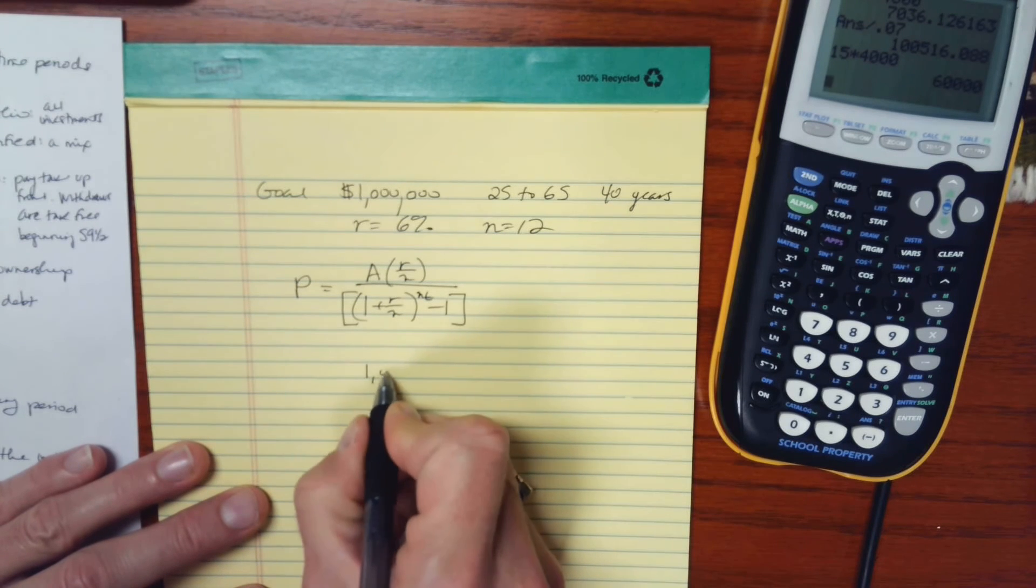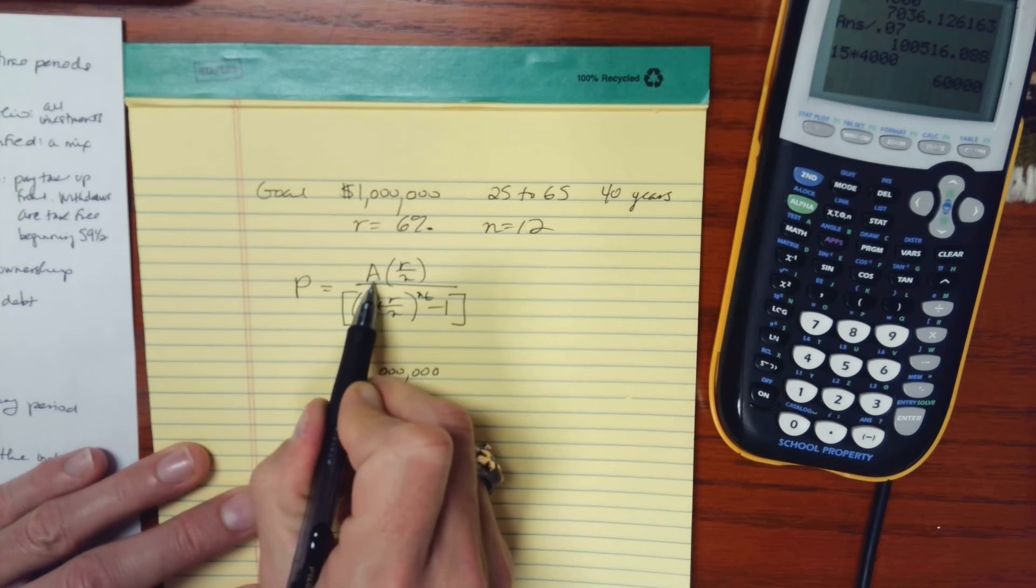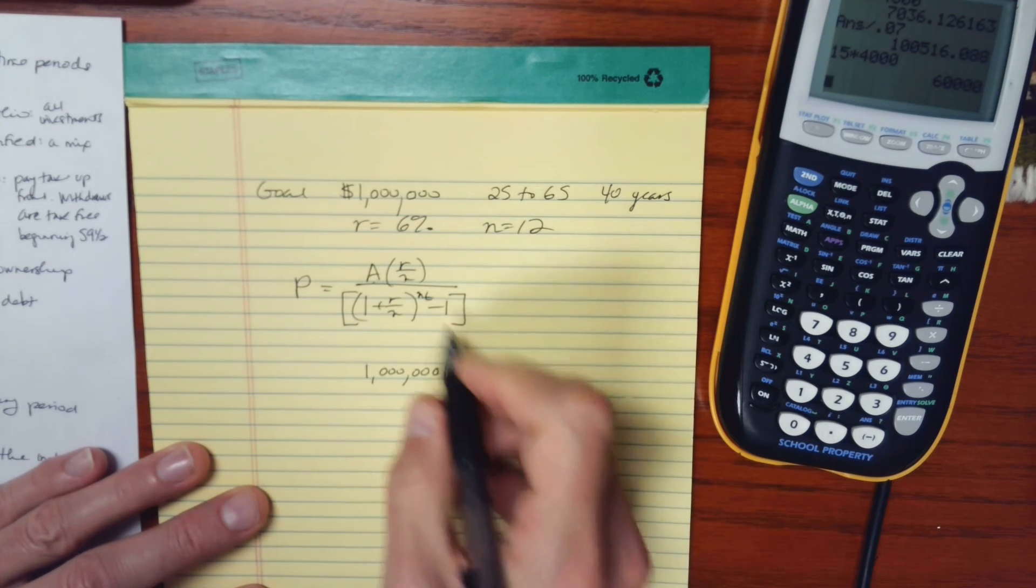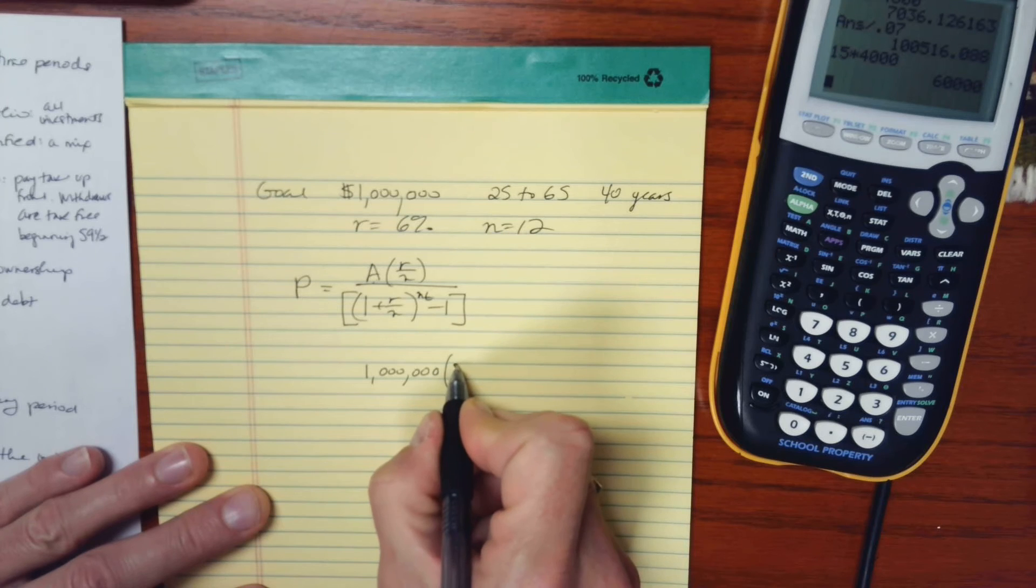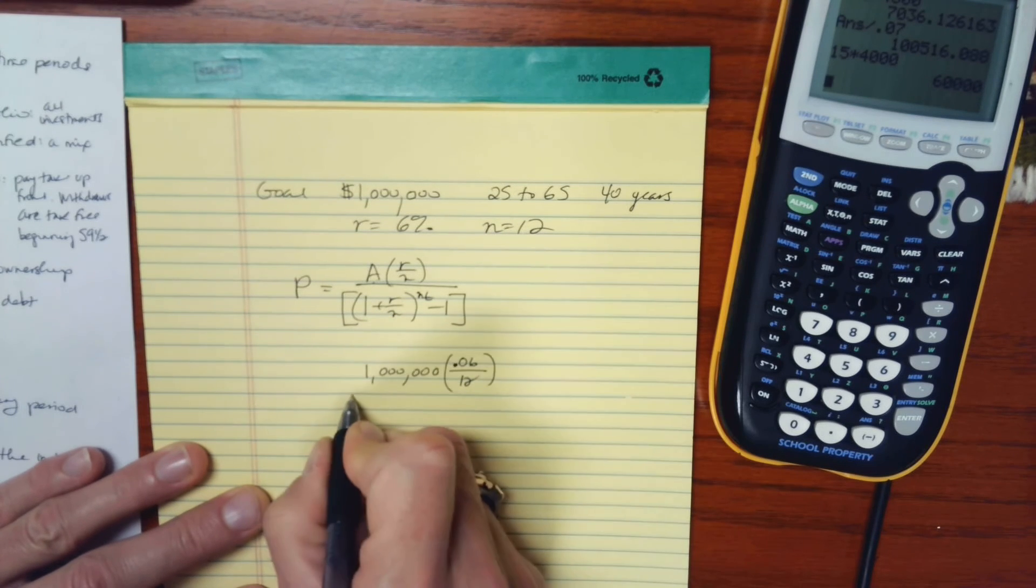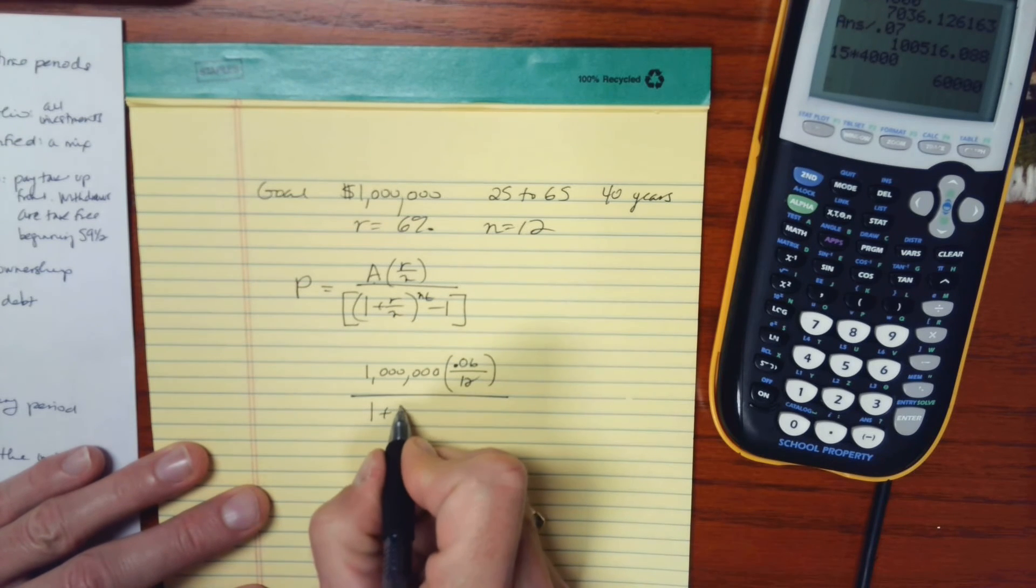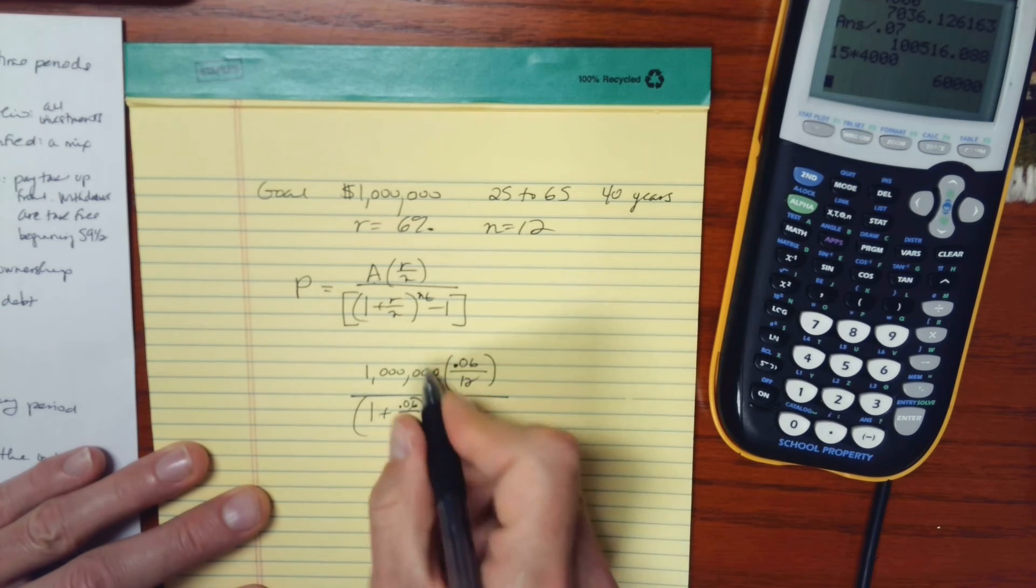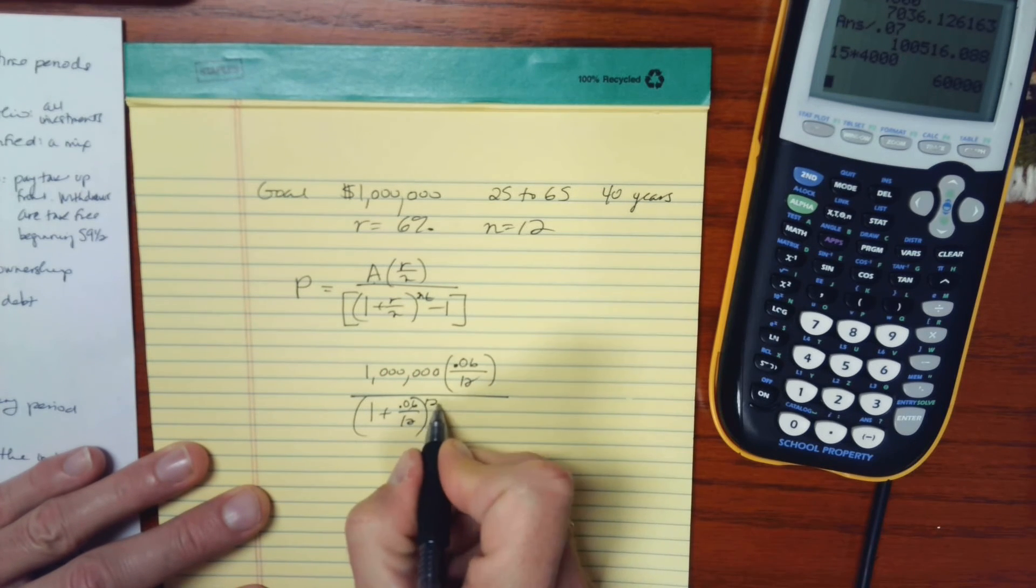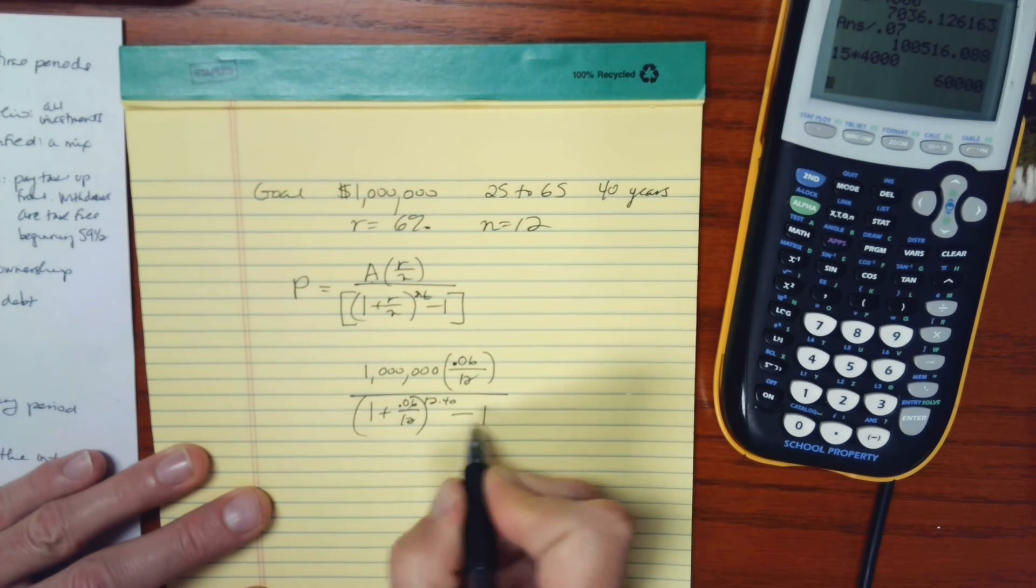So I know I want to end up with a million dollars. So that's the future value. And my interest rate is 6%, so 0.06. The n is 12. And here I have 1 plus r over n, 0.06 over 12. That's raised to a power of n times t. So 12 times, and I've got 40 years to do this, minus 1.